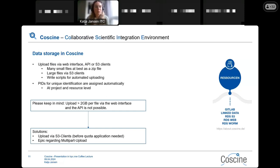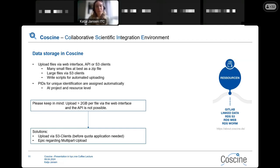You can upload files via the web interface — just go to CoSINE, upload your data, download your data, and put in the metadata. You can also access CoSINE via the API, or if you have access to S3 storage, you can use S3 clients like Cyberduck. For uploading big files it is better to use S3 clients, and for many small files it is better to put them in a zip file. We also highly recommend writing scripts for automated uploading.